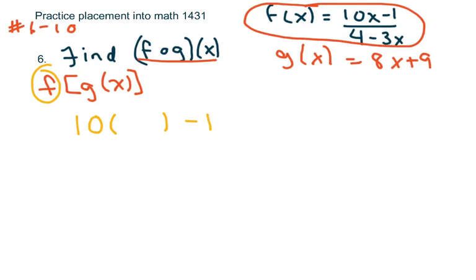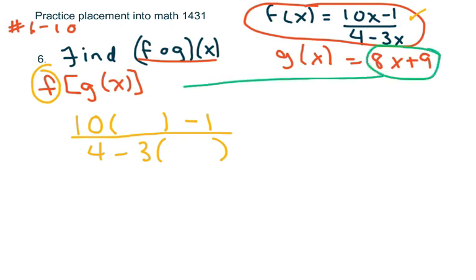So that would be this top part, and the denominator, write 4 minus 3, and there's an x, so I just put parentheses. Now what I'm going to do is dump this g(x) into my x's here, so this is going to be 8x plus 9, and 8x plus 9. And then you just simplify.